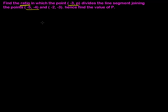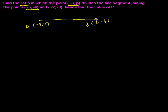Before solving, we need to sketch a rough diagram. Let me suppose this is my point (-5, -4) and give it the name A. I have another point (-2, -3), let me give it the name B. Let me join both of them — this is my line segment AB. This line segment AB is divided by the point (-3, p), which I'll call M.